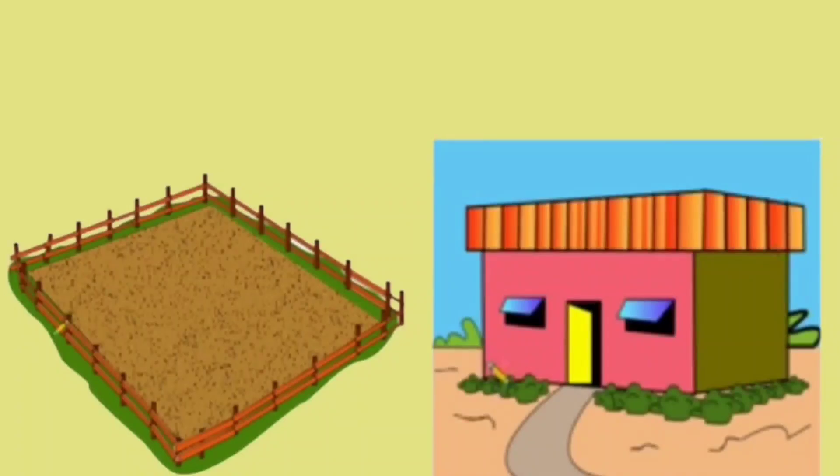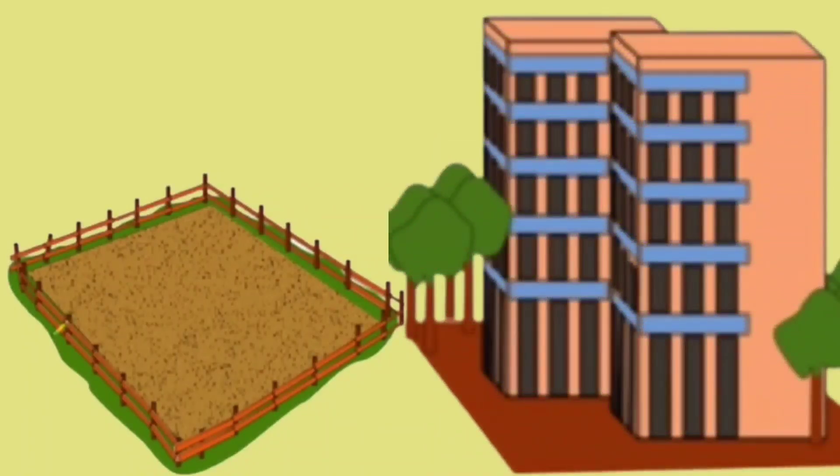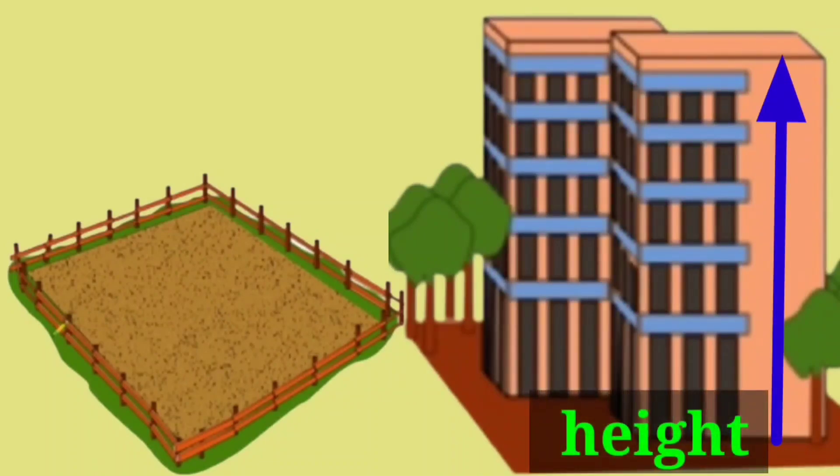If a multi-story building is built on the same piece of land, then a number of families can live in it because now its capacity is increased. So, students, as the height increases, the capacity also increases.